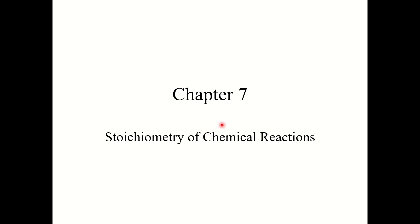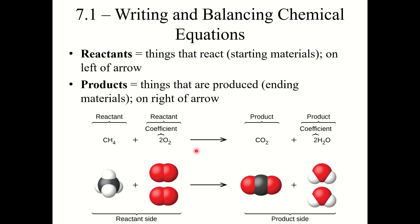Chapter 7, Stoichiometry of Chemical Reactions. We'll begin with section 7.1, Writing and Balancing Chemical Equations.